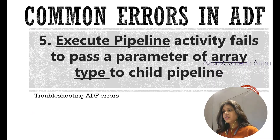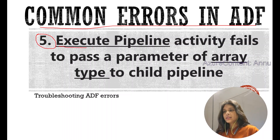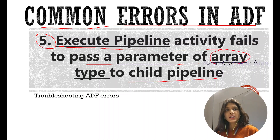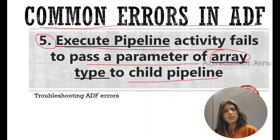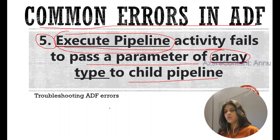Hi friends, welcome to Azure Content. This is part 5 in the common errors in ADF playlist. In this video we are going to learn how to tackle this error called 'execute pipeline activity fails to pass a parameter of array type to child pipeline.' We all know that if you want to invoke one pipeline from another pipeline, the activity we need to use is called execute pipeline activity.